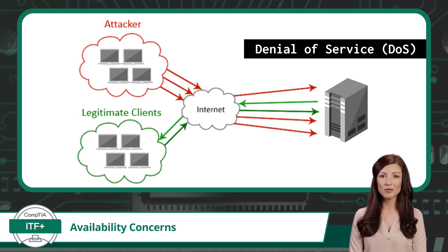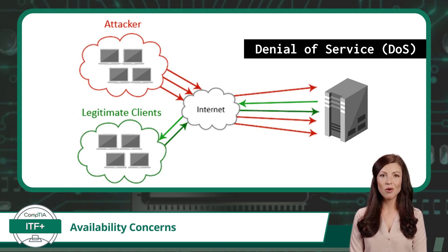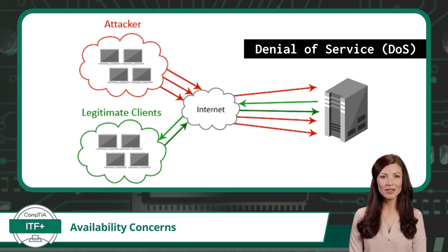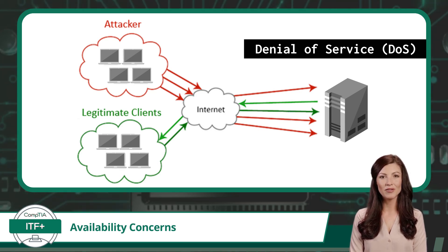The sheer volume of these requests can exhaust the target's resources, such as bandwidth, processing power, or memory. As a result, genuine users find themselves locked out, unable to access the services or information they need. In an era where uninterrupted access is crucial, DoS attacks and any of the other mentioned availability concerns must be accounted for in order to ensure data that is needed is always available.